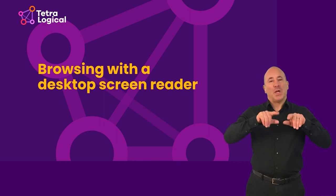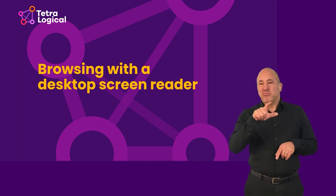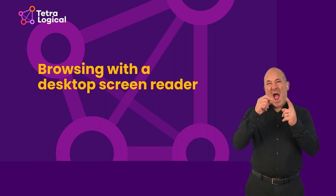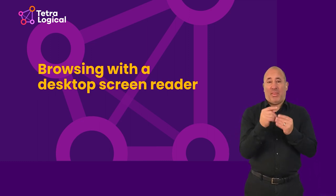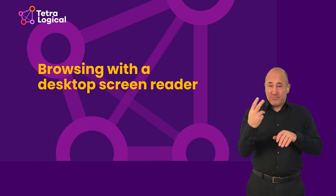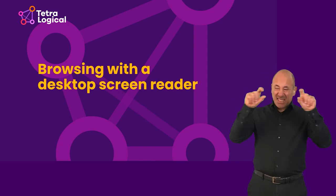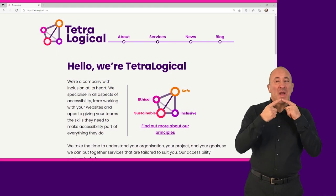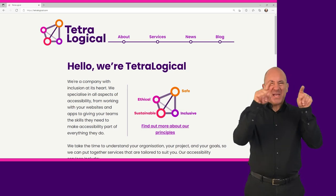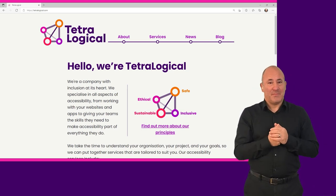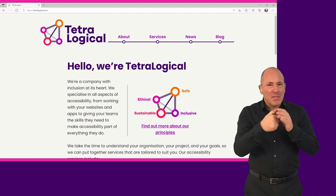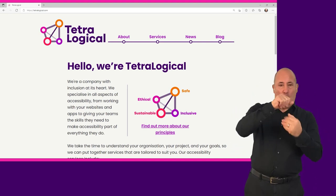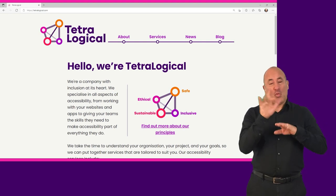Browsing with a desktop screen reader. Screen readers announce everything on a web page and within an application. All static text is spoken, including paragraphs of text, headings and lists. Screen readers also announce additional information, such as text descriptions for images, visually hidden text, and the names of landmark regions when browsing web content.